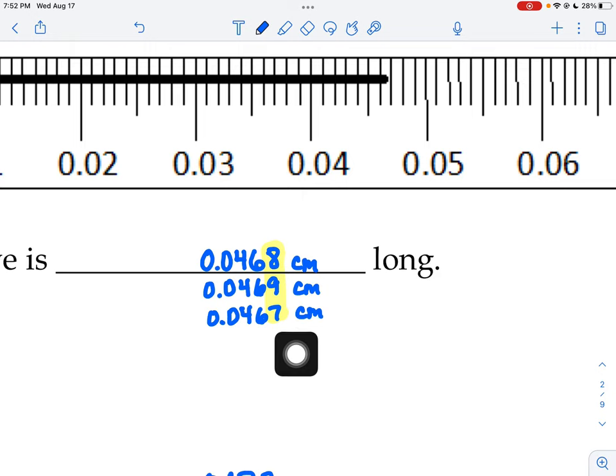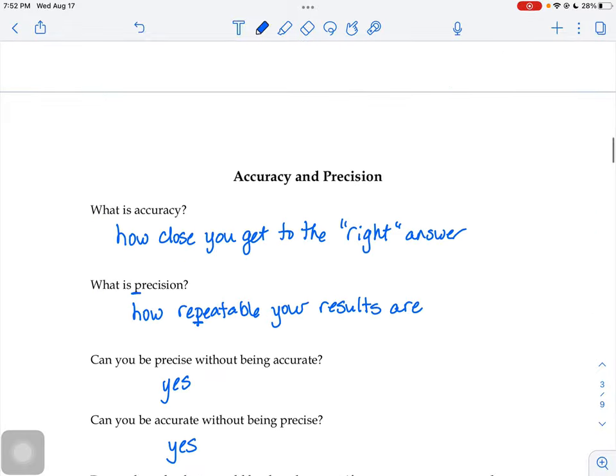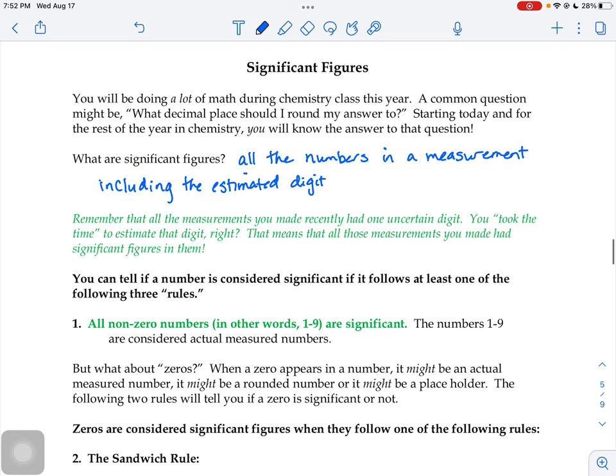When you were taking your guesses of how long that line is on the ruler, how much liquid was in the graduated cylinder, your brain took the time to take a guess on what that digit was. Anytime you make a measurement, those numbers in them we call significant figures.